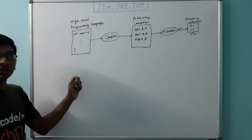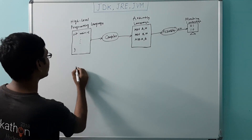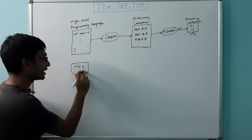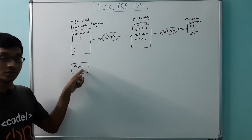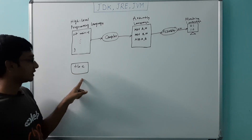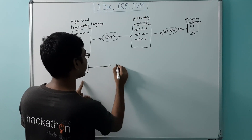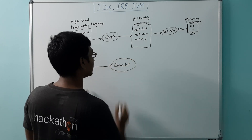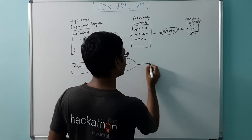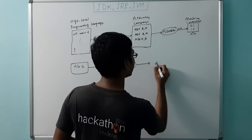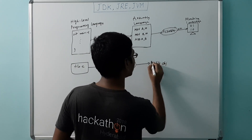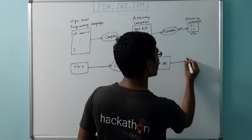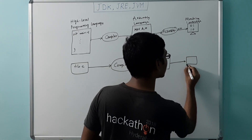Now let us understand this in C language. A C program is written and the extension of any C file is .c. It has its own compiler. Once we compile this C program, it is converted into an object file which has the machine code. Since it has machine code, this can be directly executed on the computer.